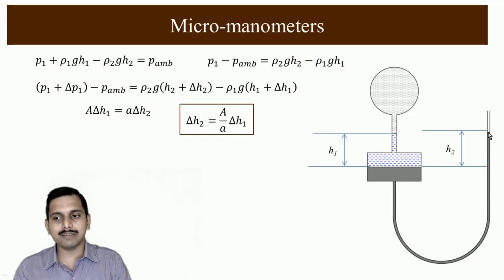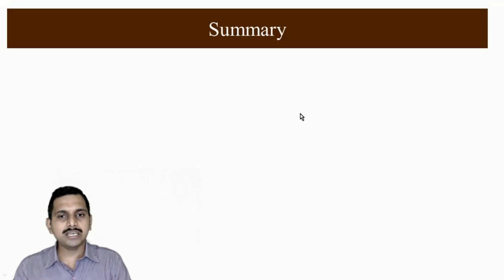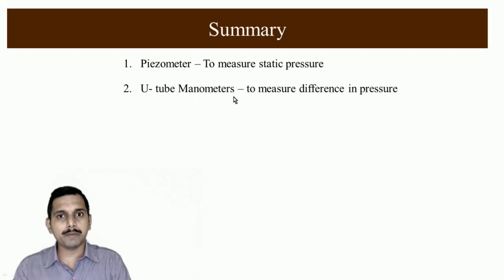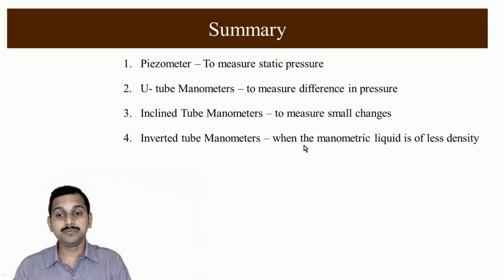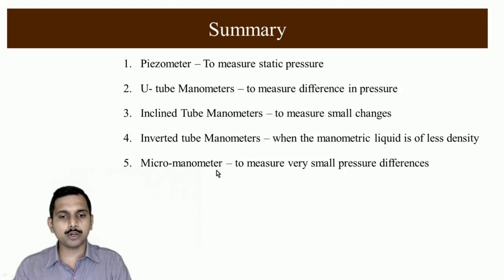If you want still more magnification you can incline this tube and you will get still more magnification of h and that is why we can measure small pressure differences. Let us see, we will summarize the things. We had discussed piezometer which is to measure static pressure, U tube manometers to measure difference in pressure, inclined tube manometers to measure small changes, inverted tube manometer when the manometric liquid is of less density, micro manometer to measure very small pressure differences.